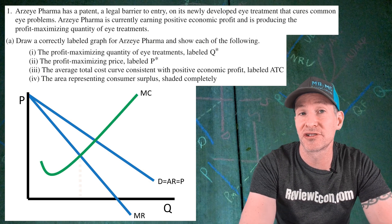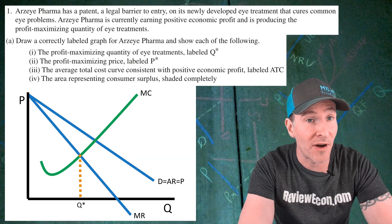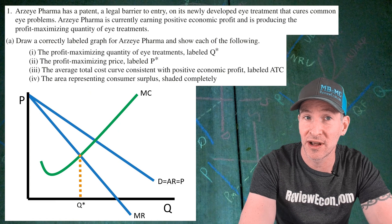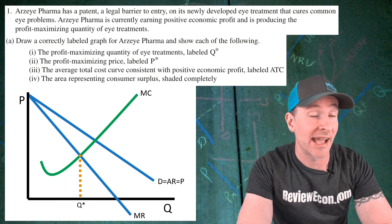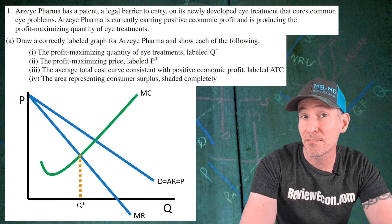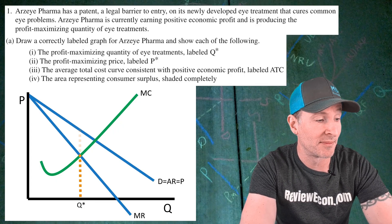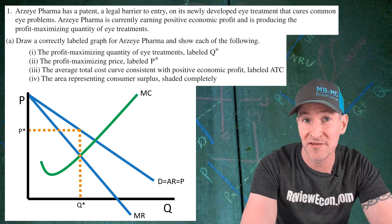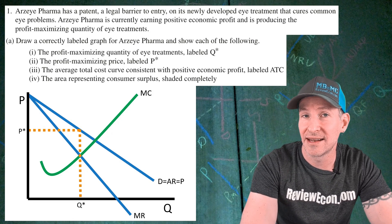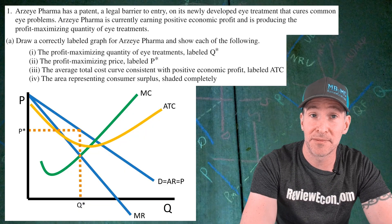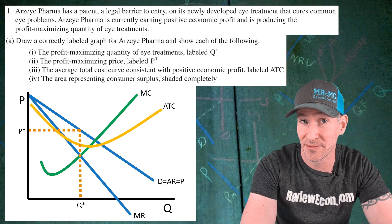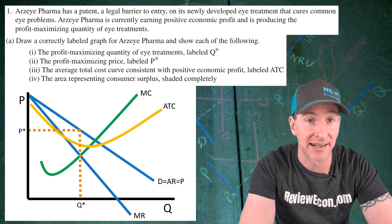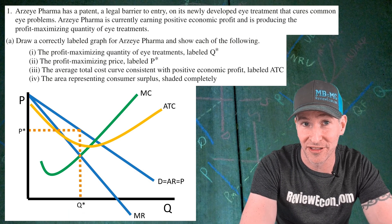The second point comes from adding in the marginal cost curve and finding the MR equals MC point, then dropping down and marking our profit maximizing quantity Q star. Remember, they don't price at the MR equals MC point — they price up above at the demand curve, and that's where your third point comes from. The next point comes from adding in the average total cost curve. It must be below the demand curve at the profit maximizing quantity, and it must be at its minimum point where it intersects the marginal cost curve.